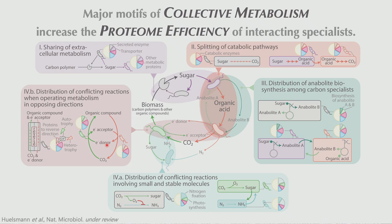The last two motifs are based on instances where metabolic functions conflict with each other — in two flavors. In one, an enzyme or intermediate of one metabolic function inhibits the enzymes of another. In the other, two metabolic functions require metabolism to run in opposing directions — for example, autotrophic and heterotrophic metabolism. The pink berries that Otto talked about are basically an instance of this type of motif.